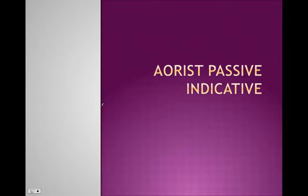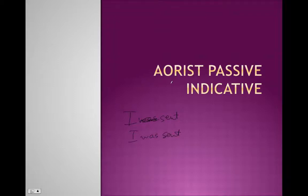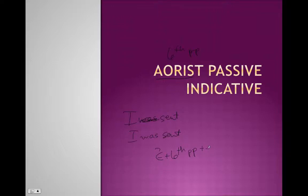This lesson covers the aorist passive indicative. So instead of 'I sent,' it's 'I was sent' in the aorist. Now unlike the present or imperfect passives, the aorist passive is going to use the sixth principal part. It's still a passive, still a past tense — we're still going to use our epsilon augment — but now we use the sixth principal part and a different set of endings.